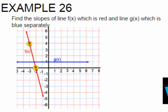We are asked to find the slope of f of x and g of x. There's actually two lines here. So let's start with f of x. f of x is the red line. g of x is the blue line.